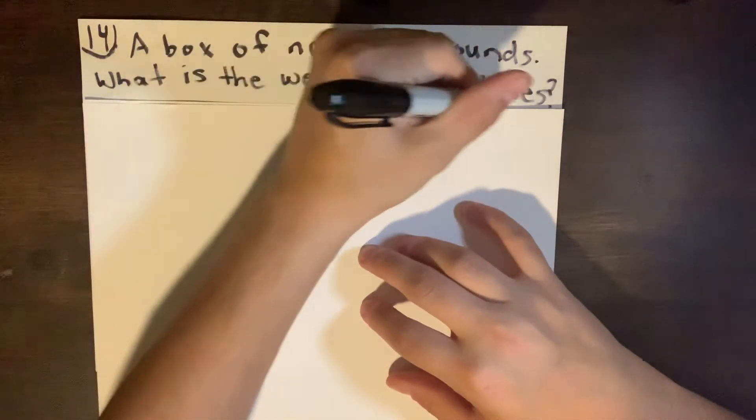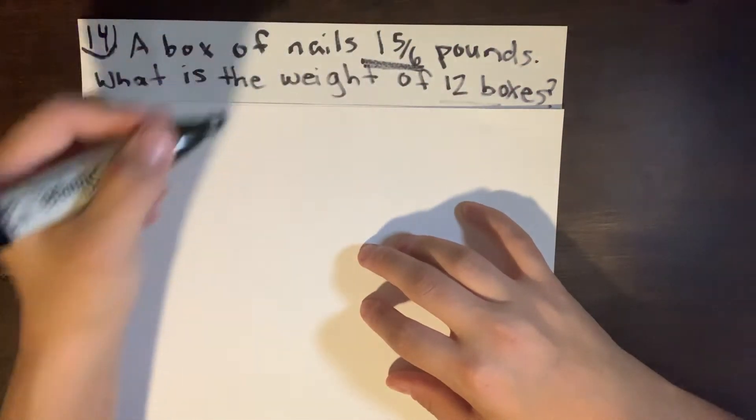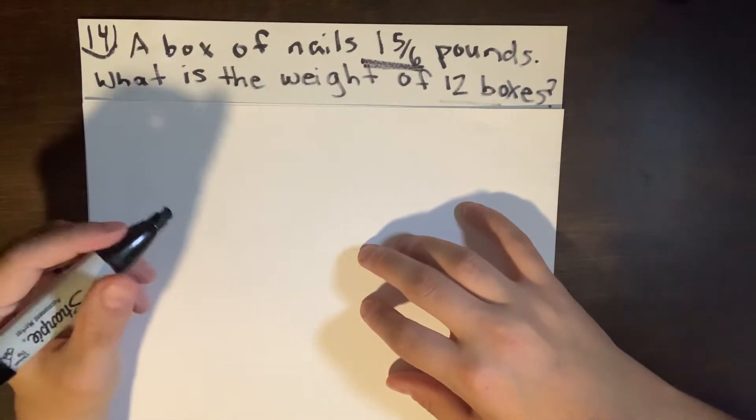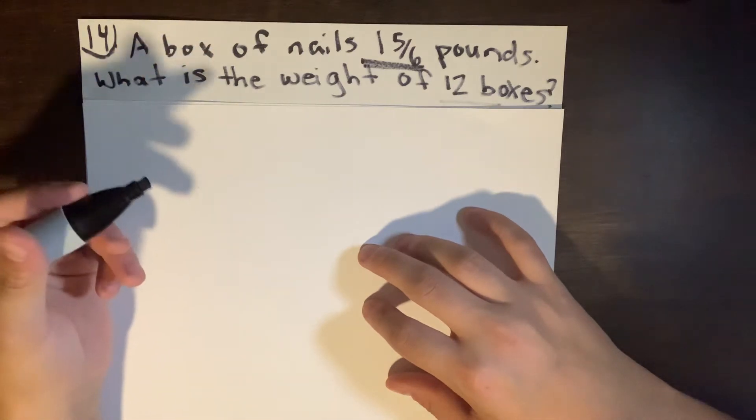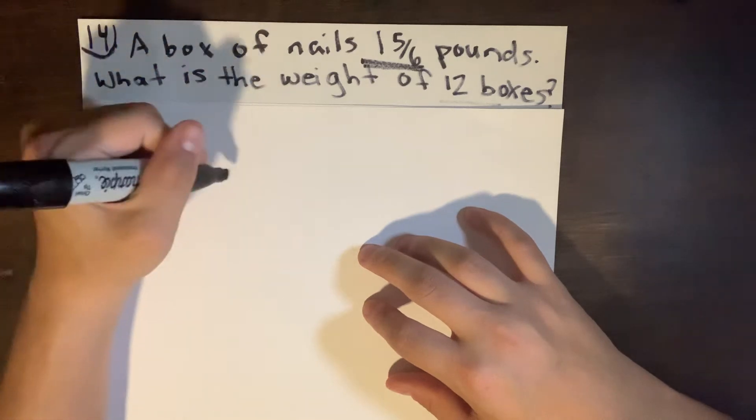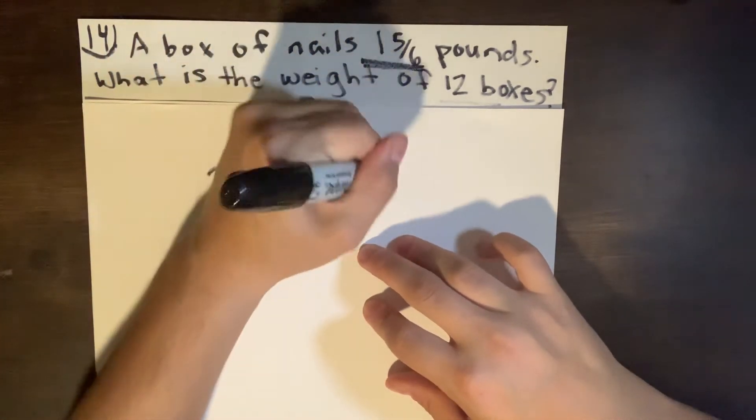So we know the total quantity is twelve boxes and we know that the amount per pounds for the box is one and five sixths pounds. So one and five sixths, that's only one sixth away from making it just a full completion of two pounds, right? So all we're going to do is do two times twelve. That's going to make twenty four pounds.